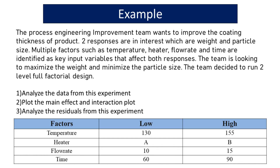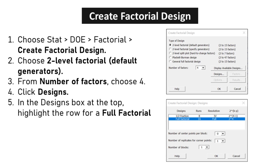The Process Engineering Improvement team wants to improve the coating thickness of a product. Two responses of interest are weight and particle size. Multiple factors such as temperature, heater, flow rate, and time are identified as key input variables that affect both responses. The team is looking to maximize the weight and minimize the particle size. The team decided to run a two-level full factorial design. Choose STAT > DOE > Factorial > Create Factorial Design. Choose two-level factorial, default generators; from number of factors, choose four.